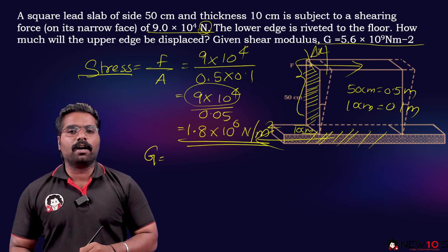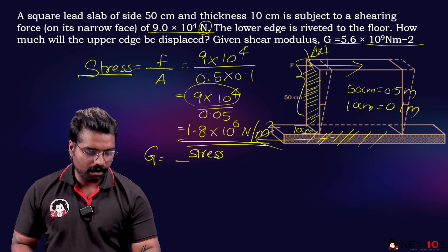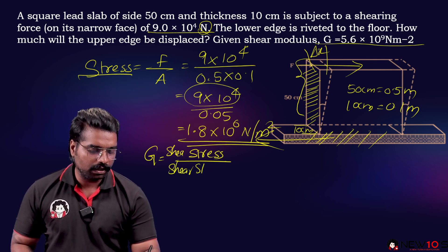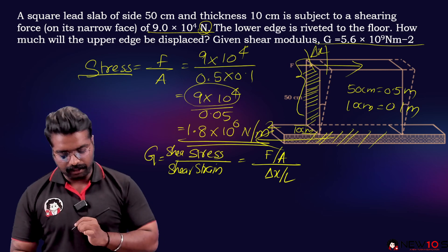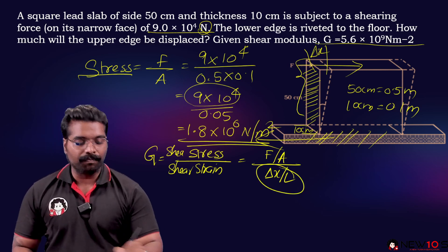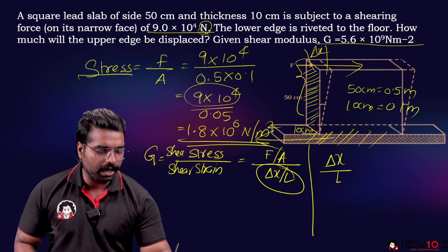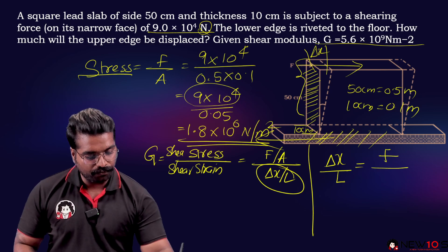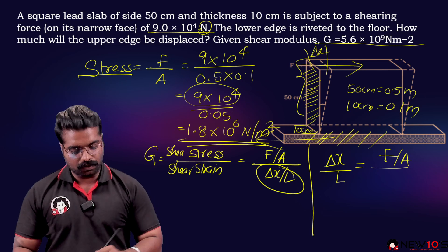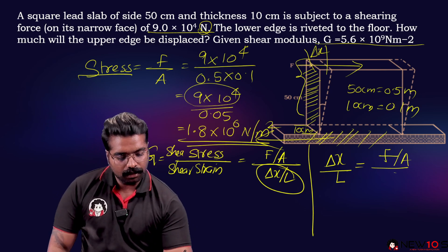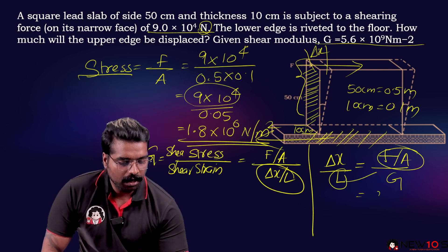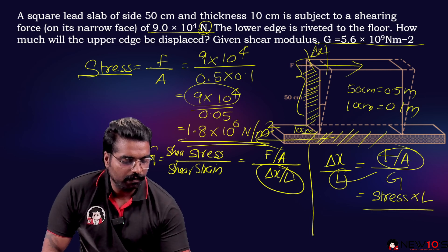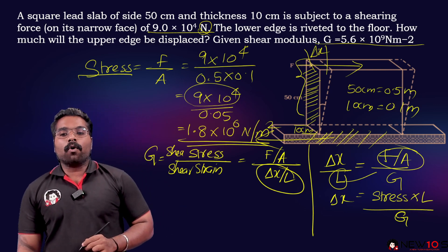Shear modulus G equals shear stress divided by shear strain. Shear stress is F divided by A, and shear strain is theta, which equals delta X divided by L. Rearranging, delta X divided by L equals F divided by A, all over G. Therefore, delta X equals stress times L divided by G.